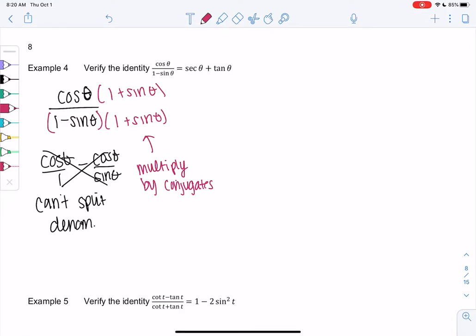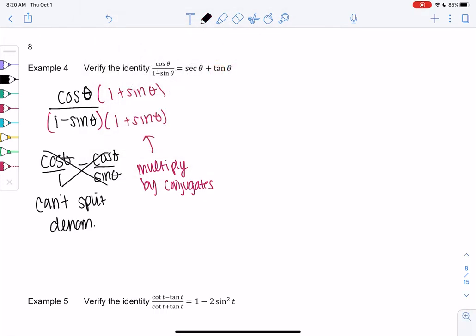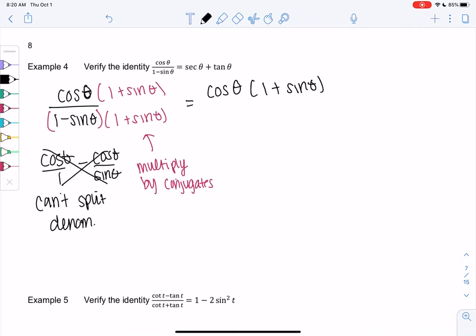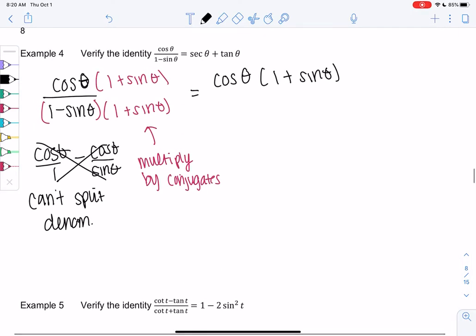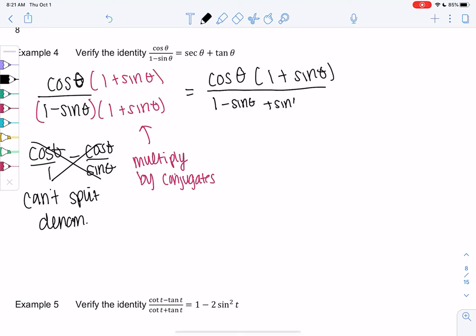Let's see, on top we get cosine times one plus sine theta. On the bottom I'm going to multiply out, so we get one minus sine squared - those middle terms cancel out, and we just get one minus sine squared.